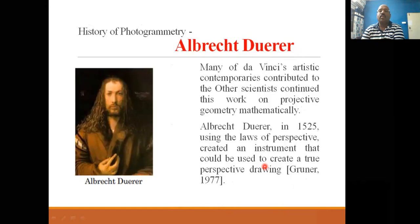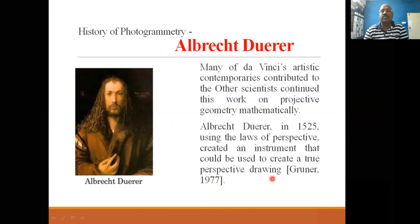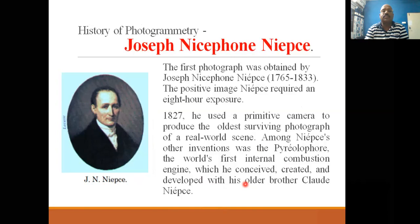Albert Dürer — many of da Vinci's artistic contemporaries and other scientists continued work on projective geometry mathematically. But Dürer, in 1525, using the laws of perspectives, created an instrument that could be used to create true perspective drawings. This instrument was very useful for creating accurate drawings.